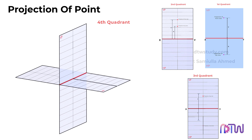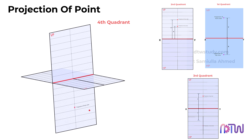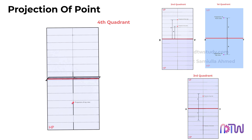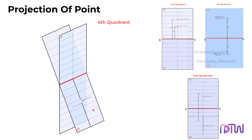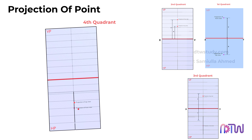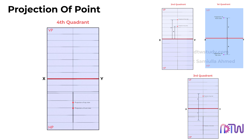Finally, when a point lies in the fourth quadrant — that is, in front of VP and below the HP — it is observed that the VP and HP overlap with each other. Consequently, in this case, both views are projected below the xy-line. This outlines how the views of points are depicted in a two-dimensional view across different quadrants.